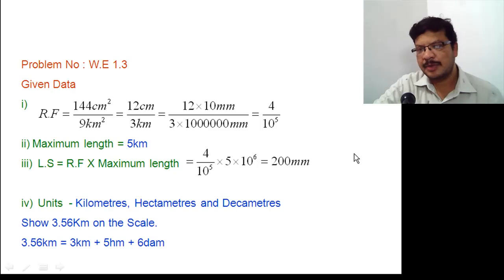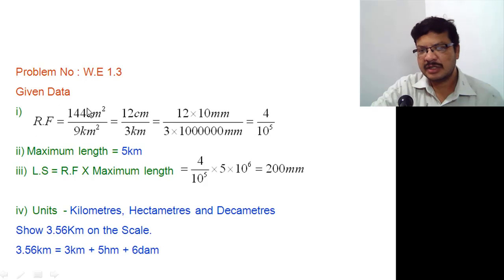In this tutorial, I will explain diagonal scale problem. The given data is drawing area is given as 144 cm² and actual area is 9 km².